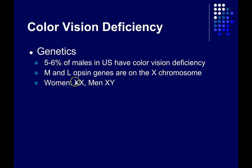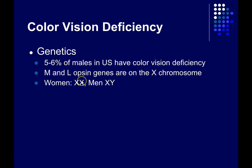So women essentially have a backup X chromosome in every cell in their body, including their photoreceptors in their retina. So if one X chromosome has a mutation that prevents them from producing a functioning medium wavelength photopigment, then they have a backup that probably doesn't have that mutation.